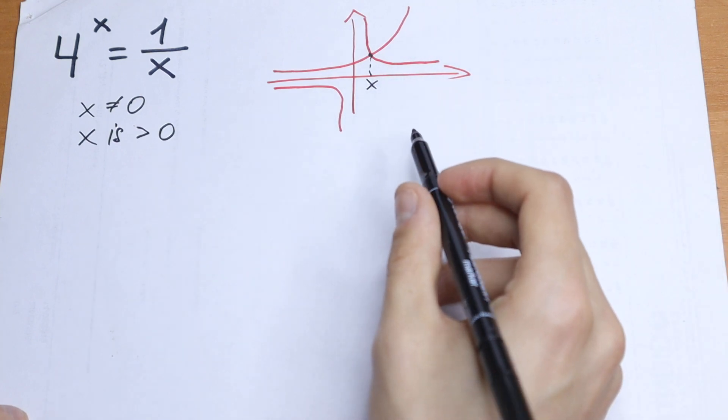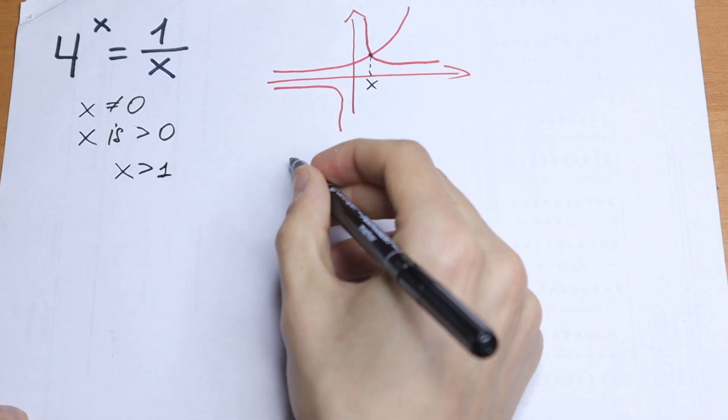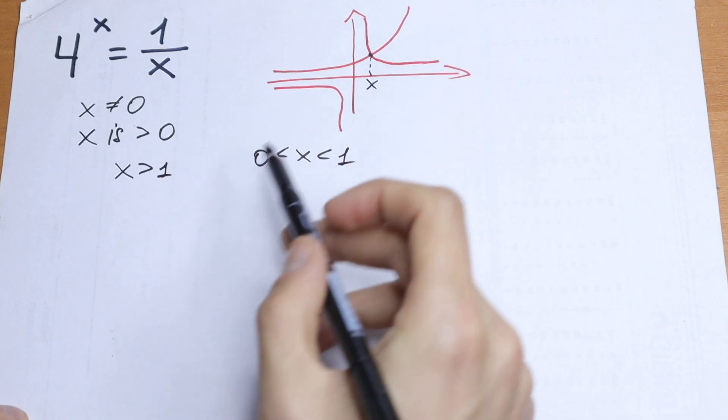So let's check the last inequalities: x is greater than 1 and x is between 0 and 1. And right here of course we will have our roots.